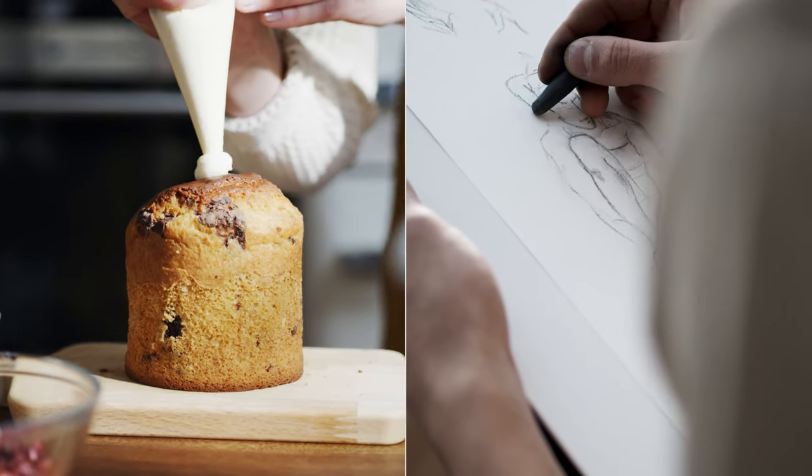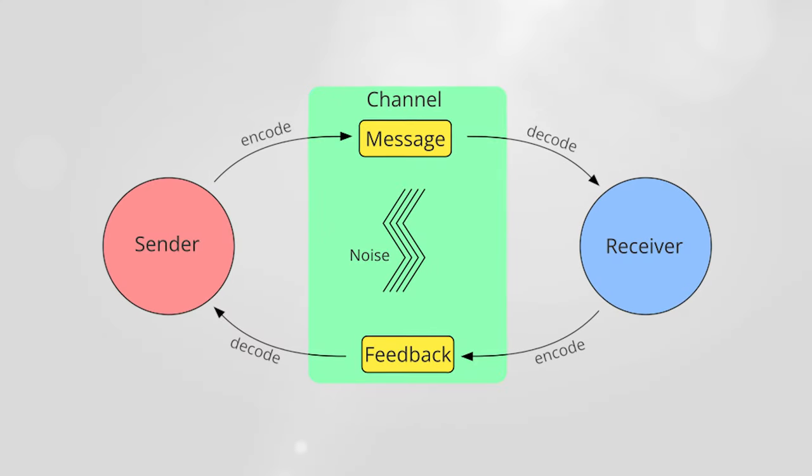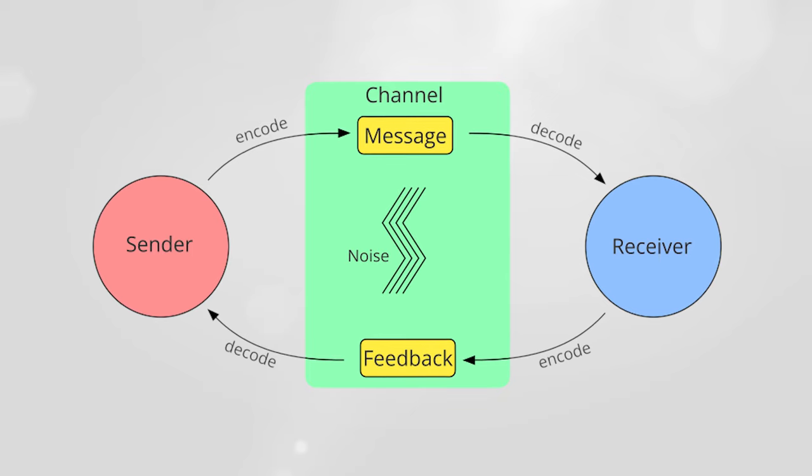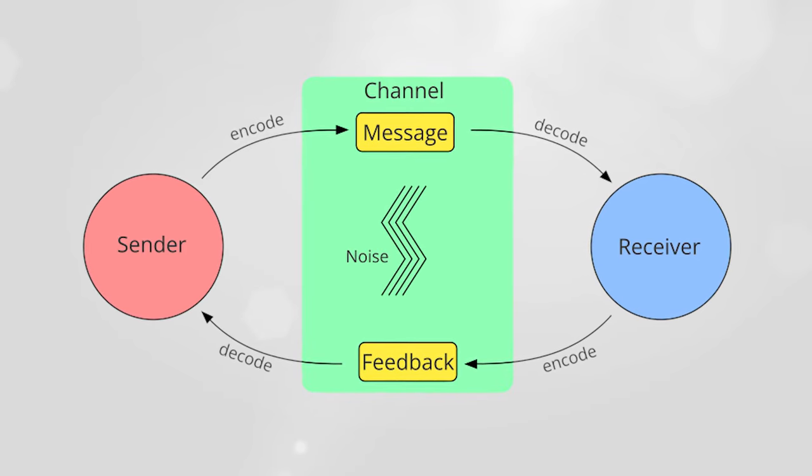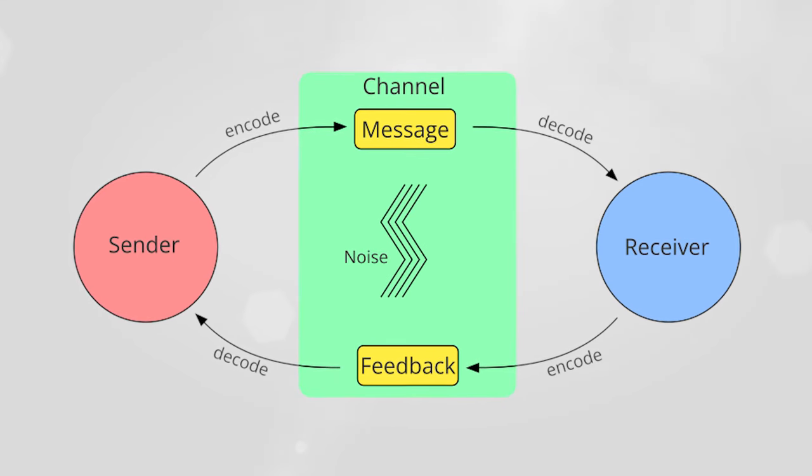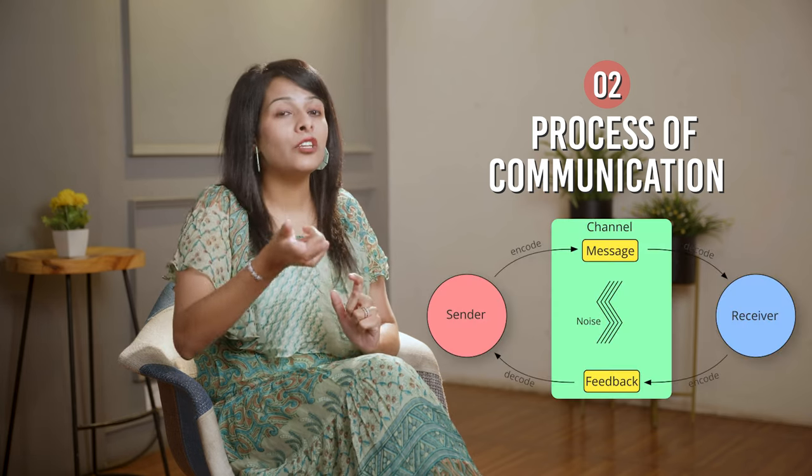The second important thing we are going to study for UGC Net Paper 1 is the process of communication. There is a process behind everything — from making cakes to making sketches. The first important component in this process is the sender. Just like in this video, I am the sender sending the message. The sender sends the message by encoding it. The process of transferring an idea into words is called encoding. I send the encoded message through a channel, which is the third component.